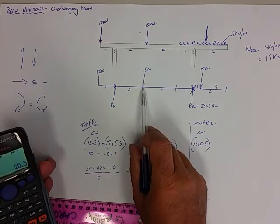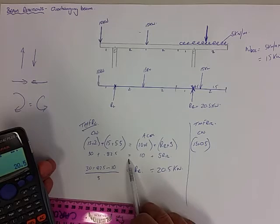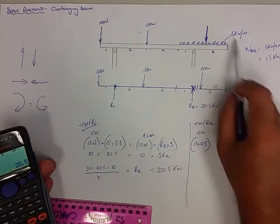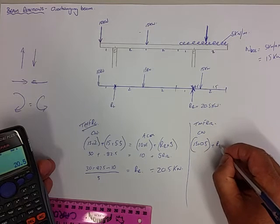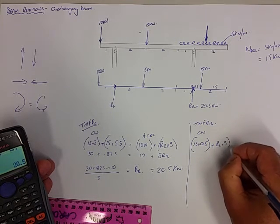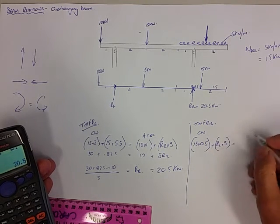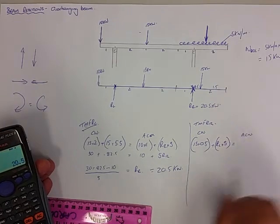And the second force along would cause an anti-clockwise. The RL will cause a clockwise. So that would be plus RL times 5 equals. So now our anti-clockwise moments.